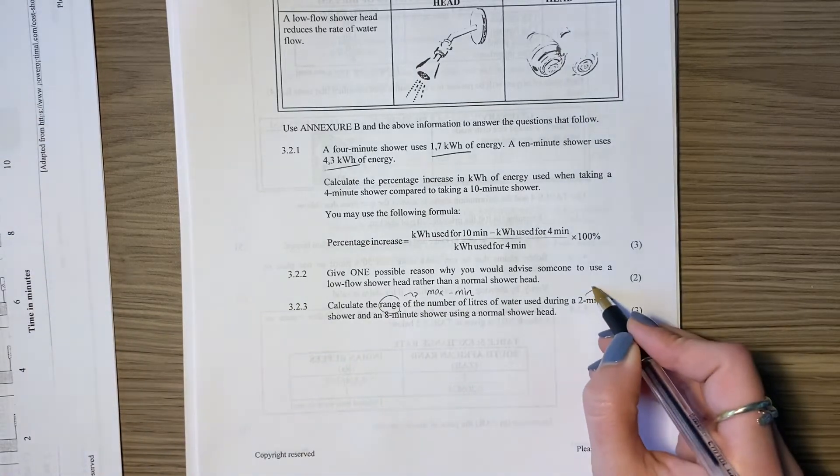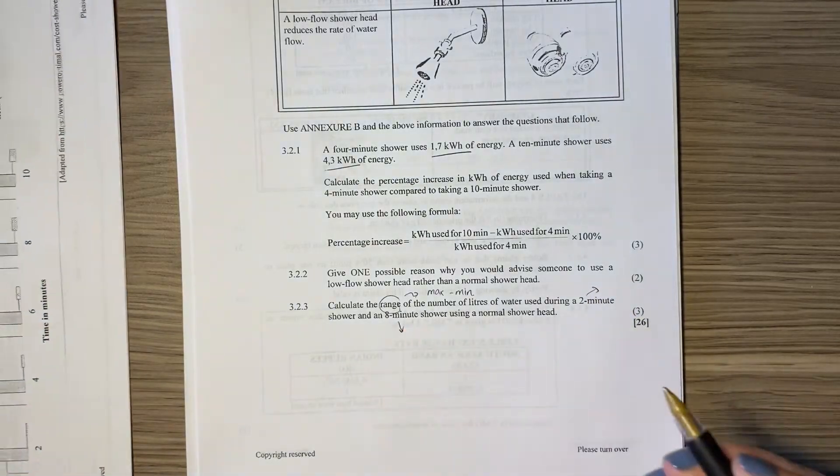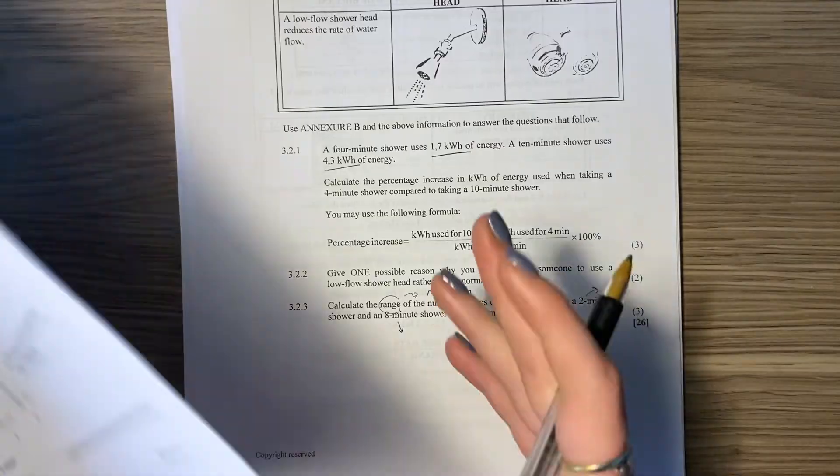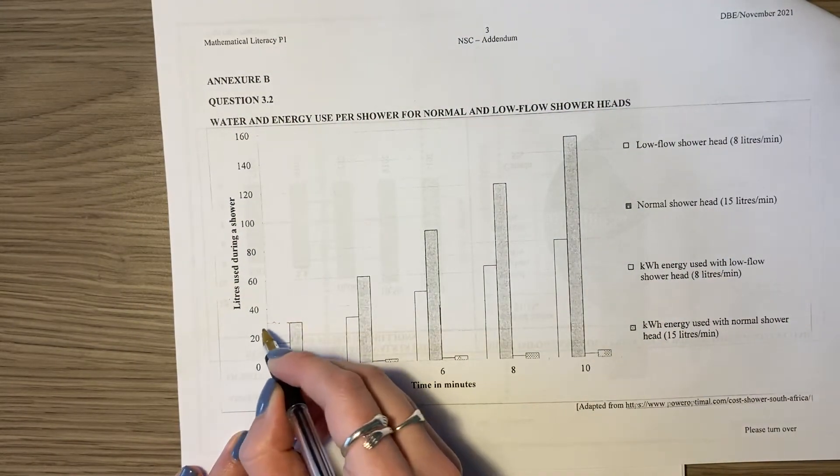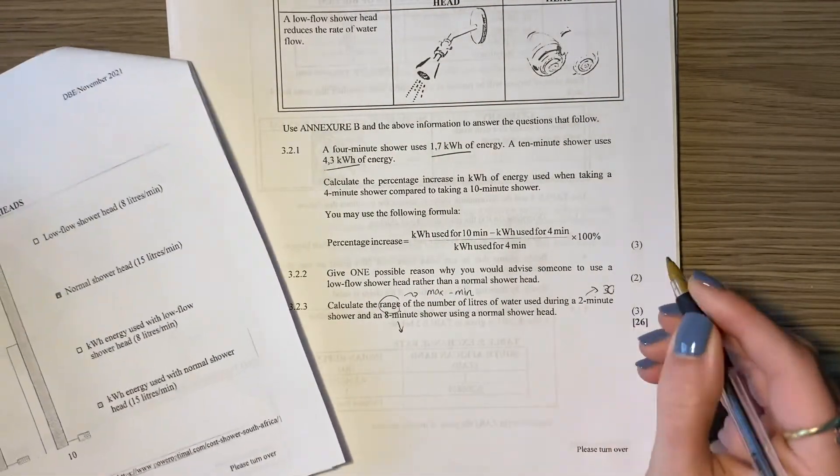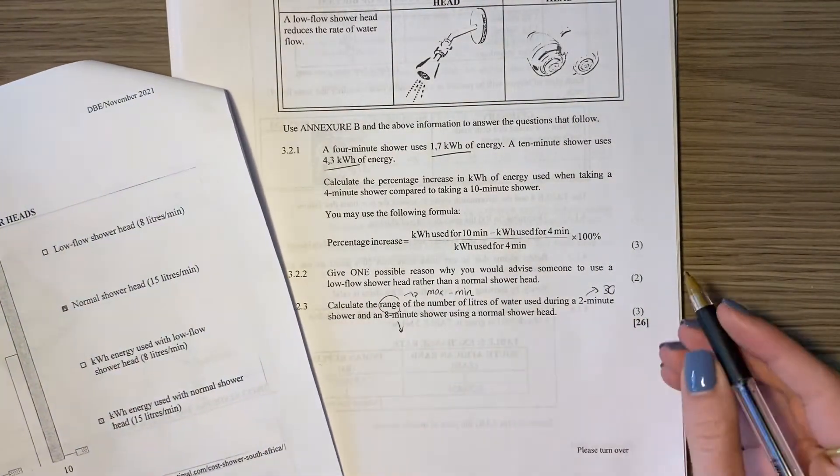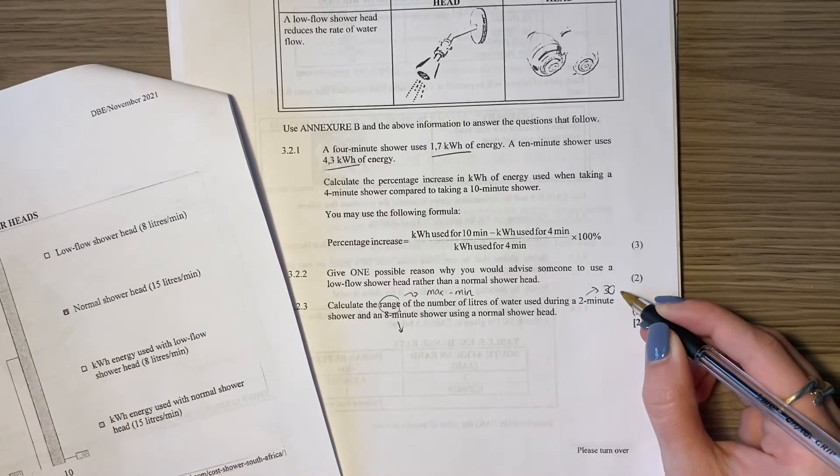So let's look and get these different values. It says water, how much water am I using, two minutes. So a two minute, it kind of looks like 30. I'm just going to pop that in there, it kind of looks like 30 liters. Yes, 30 liters.